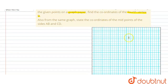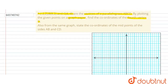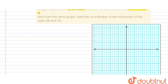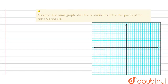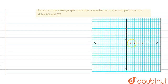We put all the data on this graph paper. First we make the axes — this is the first axis and another axis perpendicular to this. The highest point on the X-axis is eight and the highest point on the Y-axis is four.